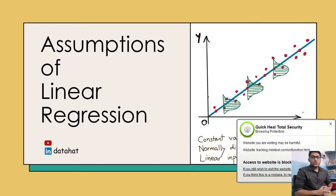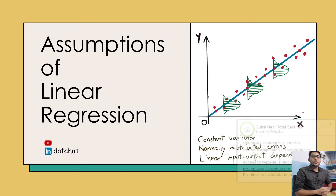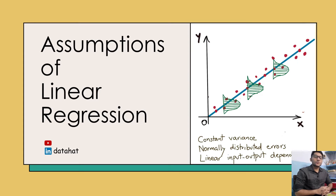Hello and welcome. In this video, we are going to discuss the assumptions associated with linear regression. Linear regression is one of the simplest statistics-based machine learning algorithms for regression problems. We are going to understand the primary assumptions associated with it, how we determine if those assumptions are met, and what steps we should undertake if those assumptions fail.